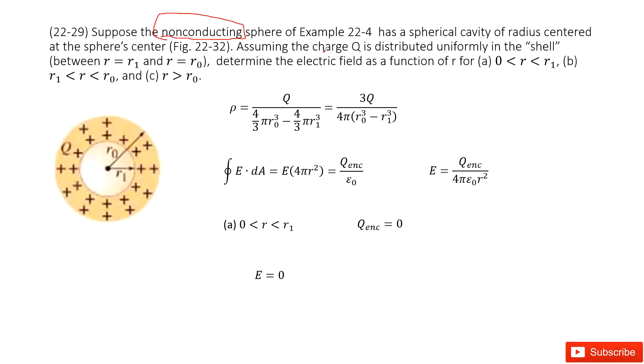And then we know the charge Q is uniformly distributed on this shell. And then we need to determine the electric field for R at different locations.